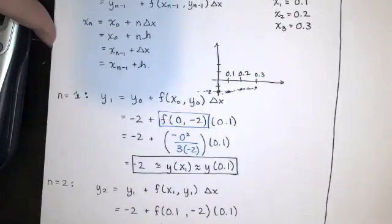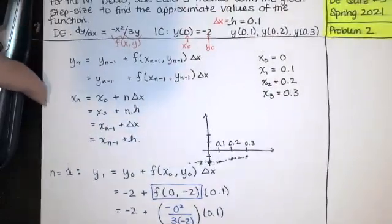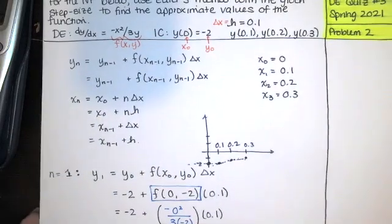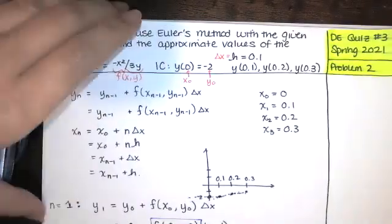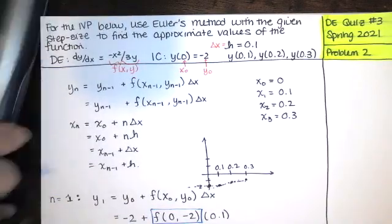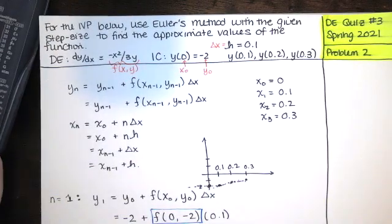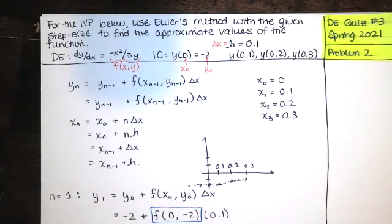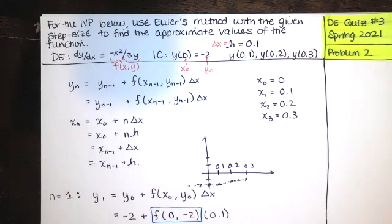That's Euler's method — how we find approximate values of the solution to this initial value problem. Euler's method is based on tangent line approximations to our curve. Since the function is differentiable, it's continuous, and that means using a tangent line as an approximation on a tiny interval around a point is not a bad idea.